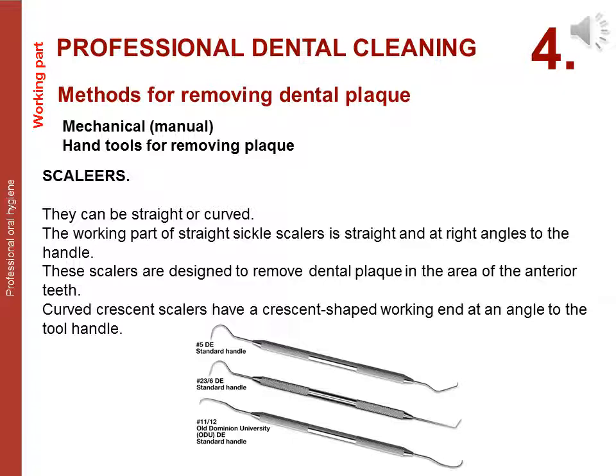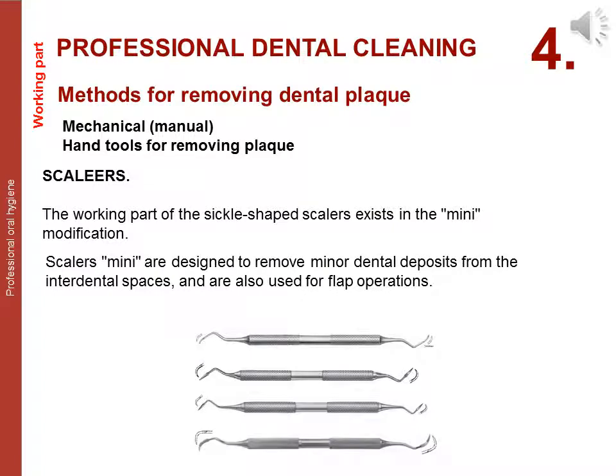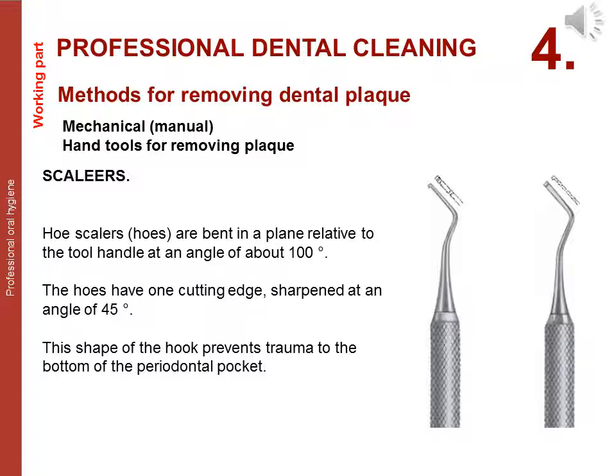Scalers can be straight or curved. The working part of straight scalers is set at right angles to the handle; these scalers are designed to remove dental plaque in the area of anterior teeth. Curved crescent scalers have a crescent-shaped working end at an angle to the handle. Mini modifications of sickle-shaped scalers are designed to remove minor dental deposits from interdental spaces and are also used for flap operations. Hoe scalers are bent in a plane relative to the tool handle at an angle of about 100 degrees and have one cutting edge sharpened at 45 degrees; this shape prevents trauma to the bottom of the periodontal pocket.